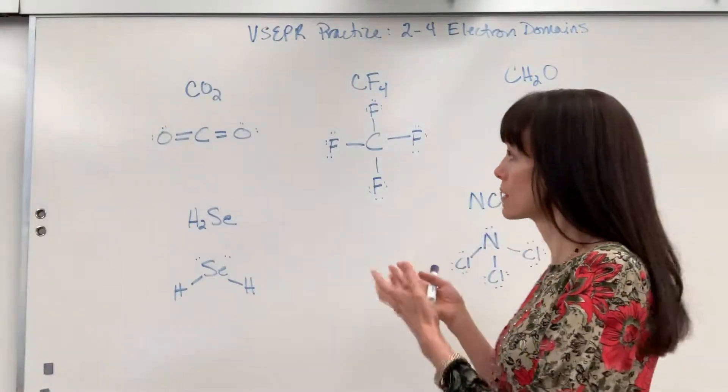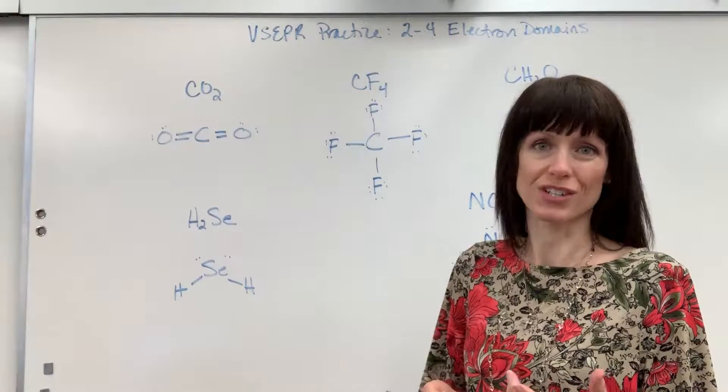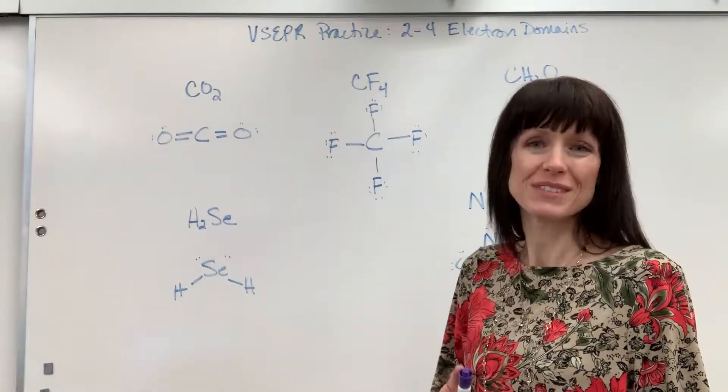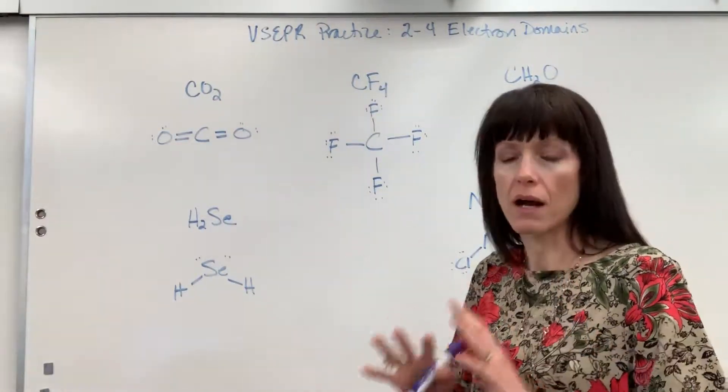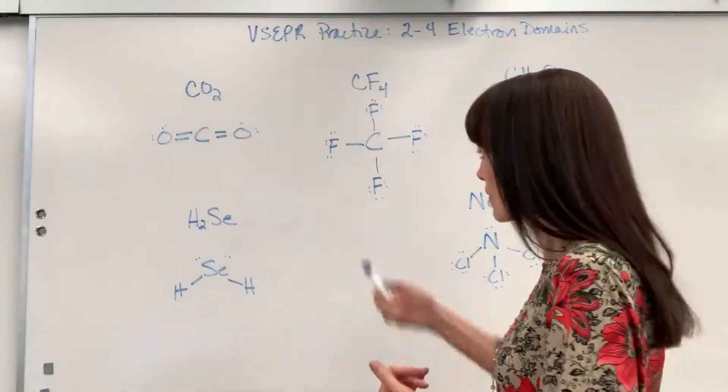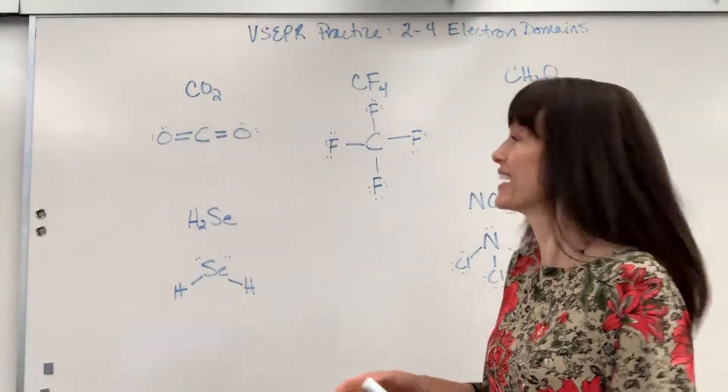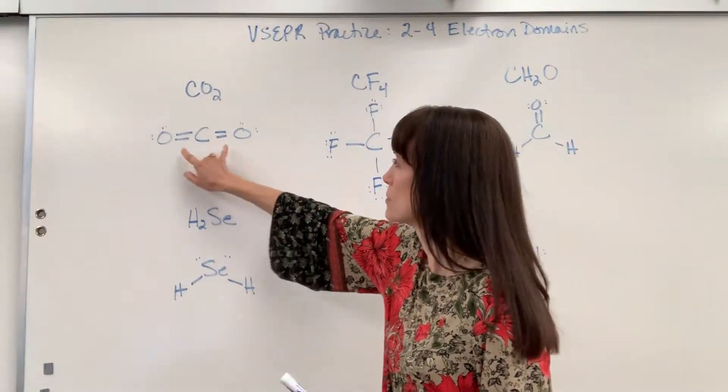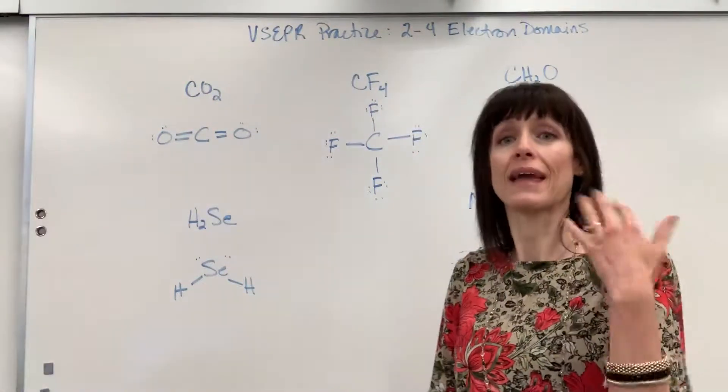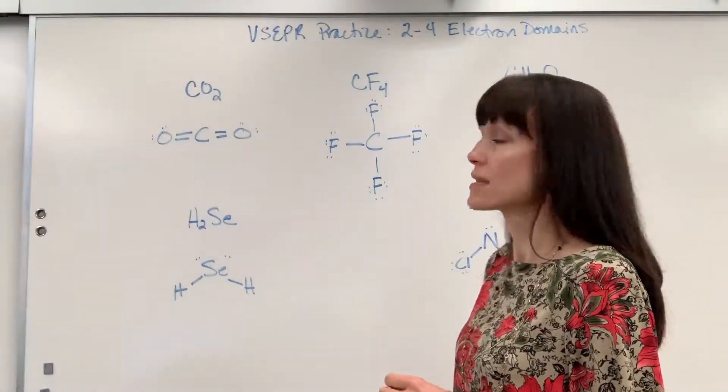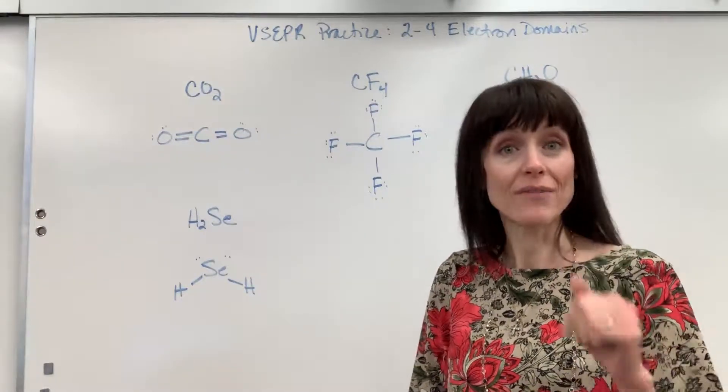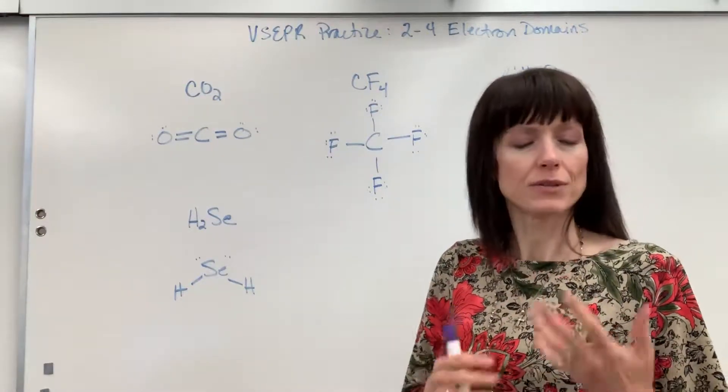So we're going to look at the compound, draw the Lewis dot structure, and then we'll add all of our VSEPR information to it. We'll start with a carbon dioxide. So carbon is a central atom double bonded to each of the oxygens. Remember when we're counting electron domains, it's always the electron domains around the central atom.